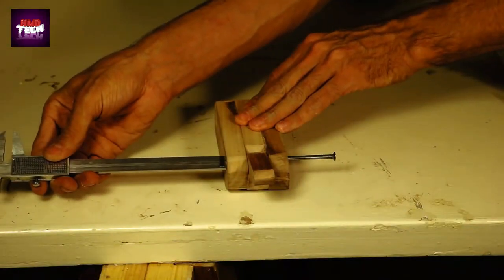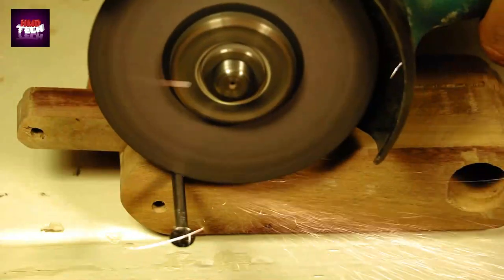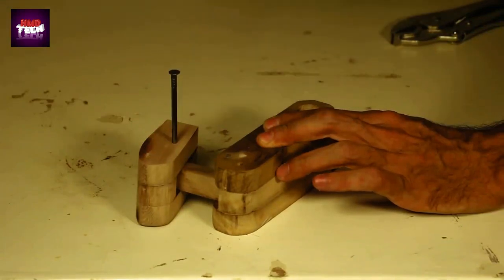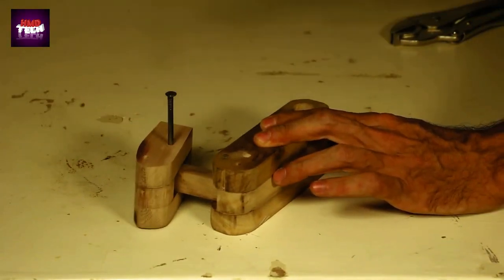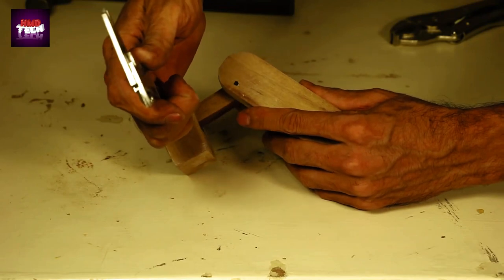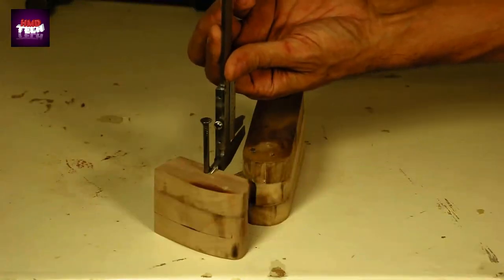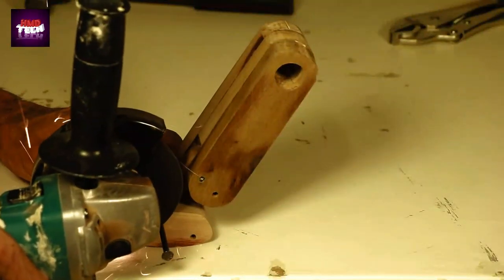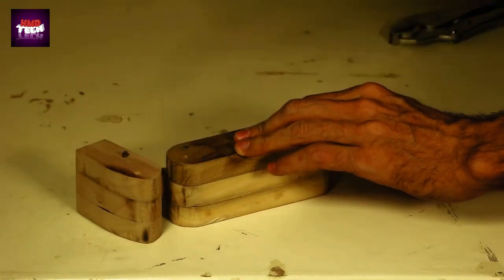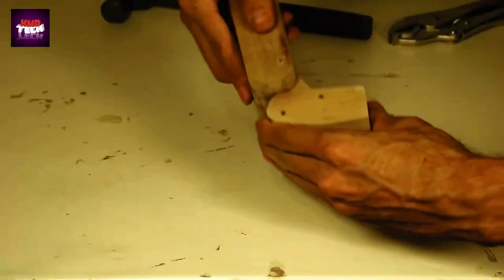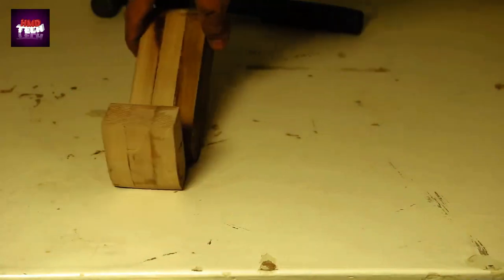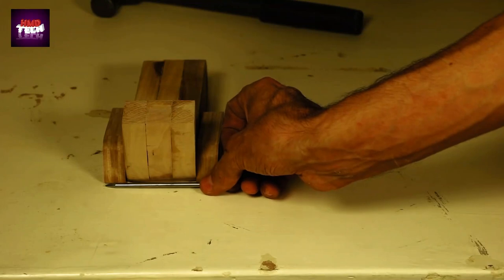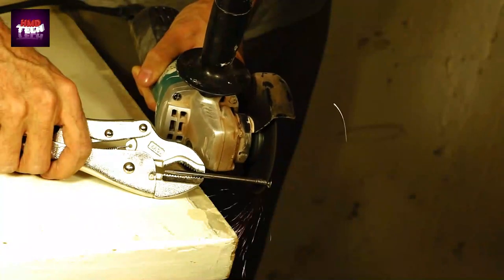I used calipers to check how far I should push the nail in, and then mark the distance and cut it off with a grinder. The next two nails were the right size, so all I had to do was cut their heads off.